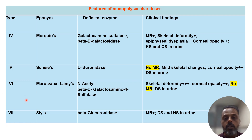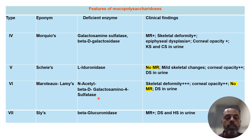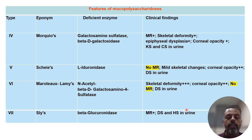Type 6 is Maroteaux-Lamy syndrome, associated with deficiency of N-acetyl-beta-D-galactosamine-4-sulfatase. Its characteristic features include skeletal deformity, corneal opacity, NO mental retardation, and excretion of dermatan sulfate in the urine. Type 7 is Sly syndrome, associated with deficiency of beta-glucuronidase enzyme. It is associated with mental retardation and excretion of dermatan sulfate as well as heparan sulfate in the urine.